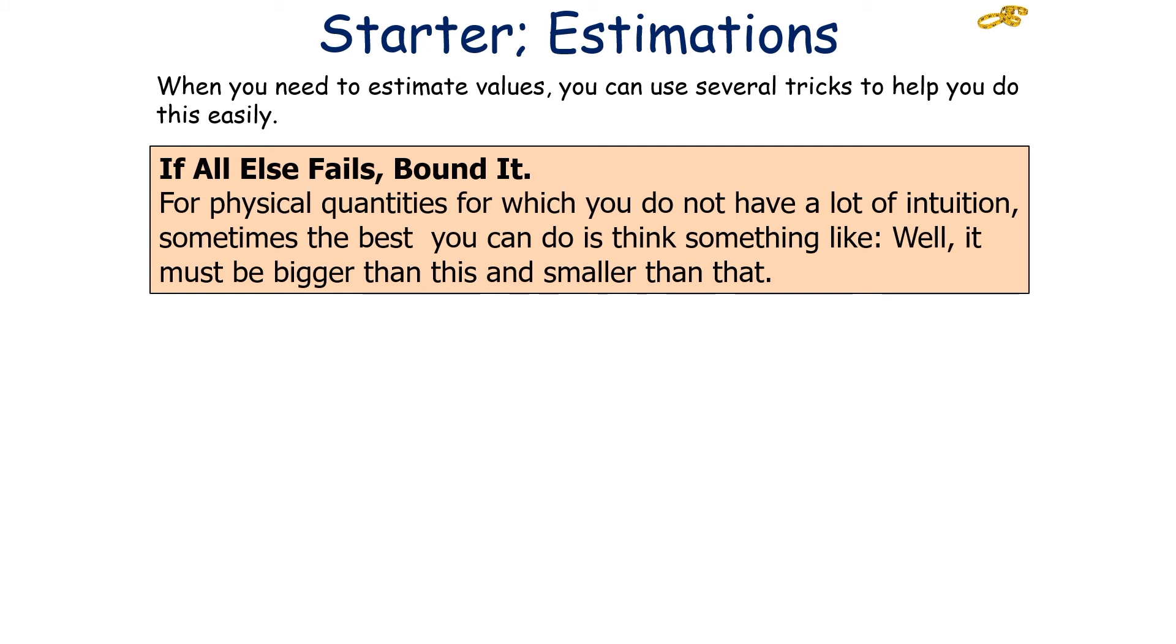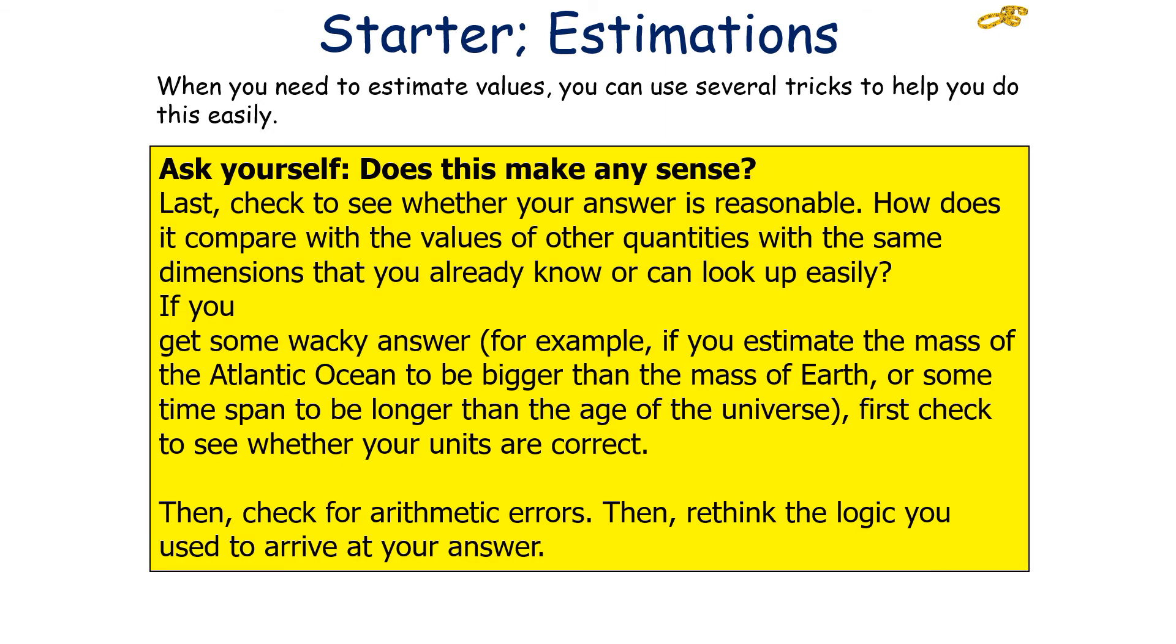If all else fails, if you really have no idea what the estimation could be, you can bound it. What this means is for physical quantities which you don't have a lot of intuition for, sometimes it's best to think, well, it must be bigger than one thing, but smaller than another. For example, if you know the length of an object that's bigger than it, and then a length of something that's smaller than it, you can work out what values it lies in between.